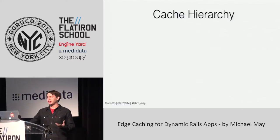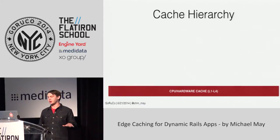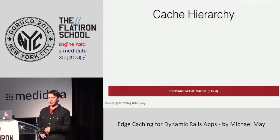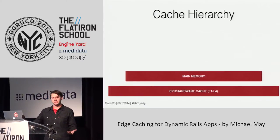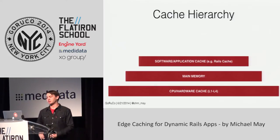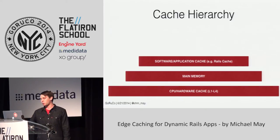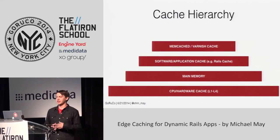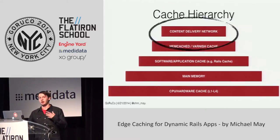Let me briefly mention all of the different types of caches. At a very foundational low level, you have the CPU and hardware cache. On top of that, you have main memory, which is a cache for your hard disk. Then you have software caches and application caches. Further up, you have things like Memcached and Varnish cache. And at the very top, we have content delivery networks, which we are going to talk about.